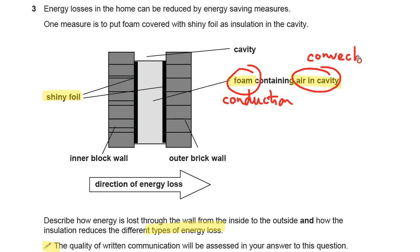So make that your second paragraph. And by paragraph I just mean a couple of sentences. It doesn't need to be really any more than that. A couple of detailed sentences. And then the shiny foil. That is trying to reduce radiation.